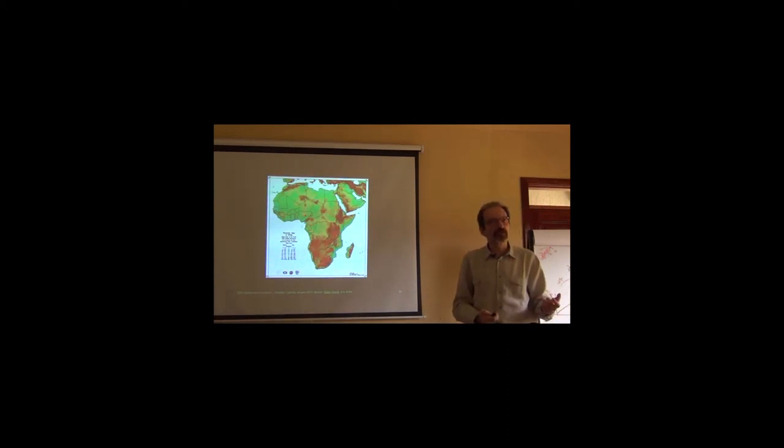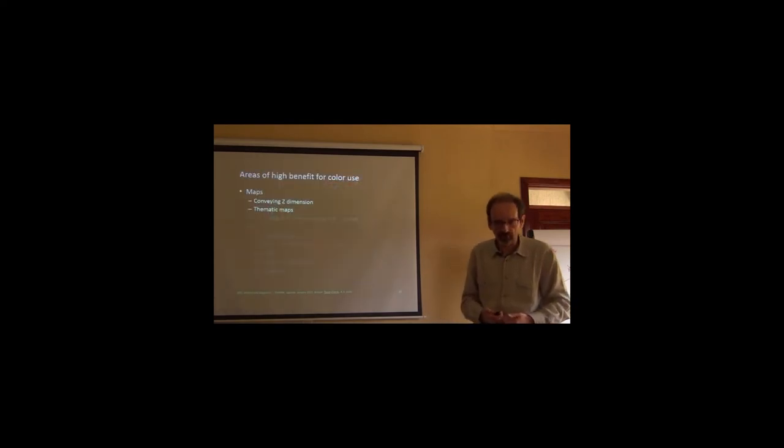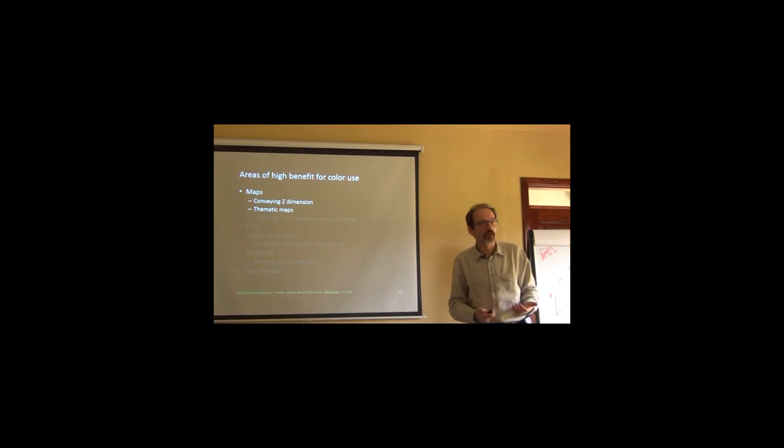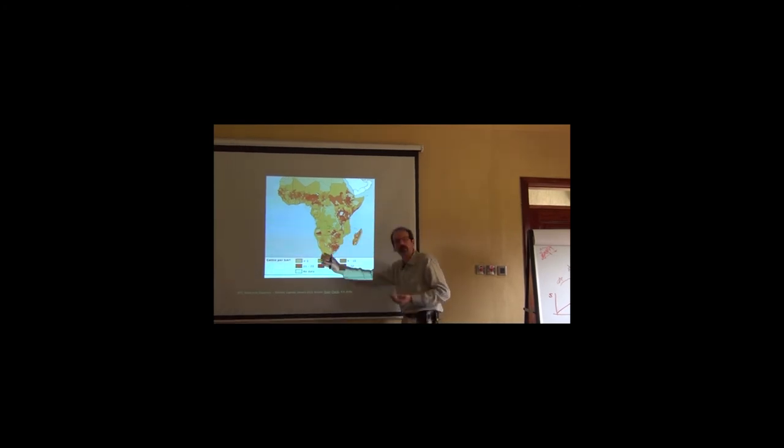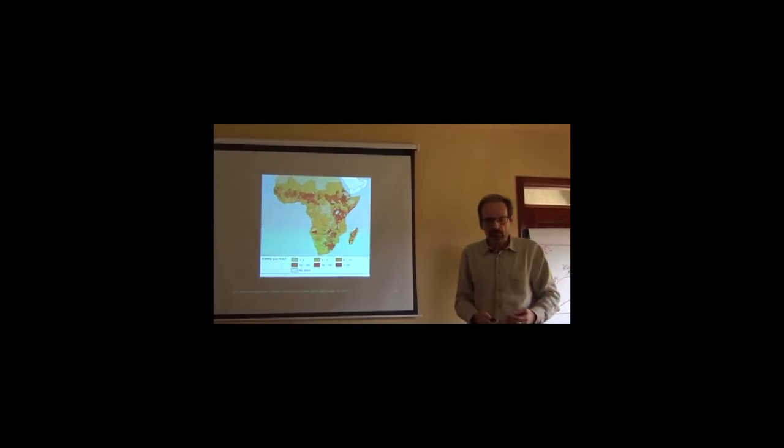But color can also convey a different type of information, not necessarily a z-axis, but an information that needs to be spread over a surface. So, in thematic maps, colors are quite useful. Although, they can often be substituted by shades of gray, as Tufte demonstrated earlier. This is a map of cattle density in Africa and it uses only one hue of color. A hue of color with different shades to it. So, it's basically a family of colors.